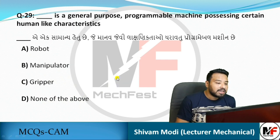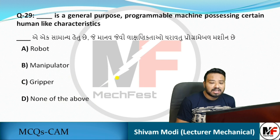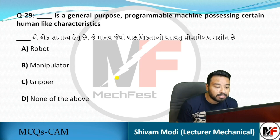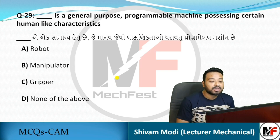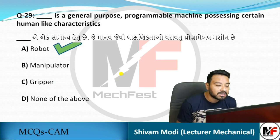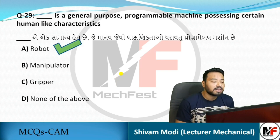Next question: a general-purpose programmable machine possessing certain human-like characteristics is called — obviously the answer is a robot.